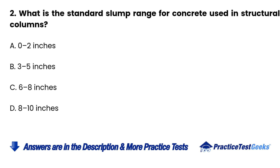Question 2. What is the standard slump range for concrete used in structural columns? A. 0 to 2 inches. B. 3 to 5 inches. C. 6 to 8 inches. D. 8 to 10 inches.